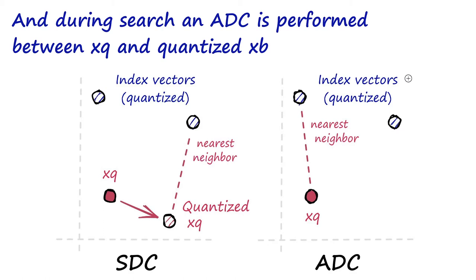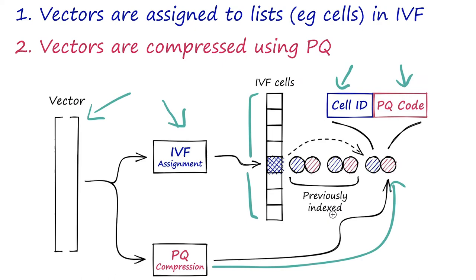During search, this is where the ADC part comes in — Asymmetric Distance Computation. In product quantization there are two alternative ways of searching. First, symmetric distance computation: you take your query vector xq, quantize it, and compare it to all your pre-quantized index vectors — both sides are quantized. The alternative, which tends to work better, is asymmetric distance computation: you don't quantize your query vector, you take xq as-is and compare it to your pre-quantized indexed vectors.